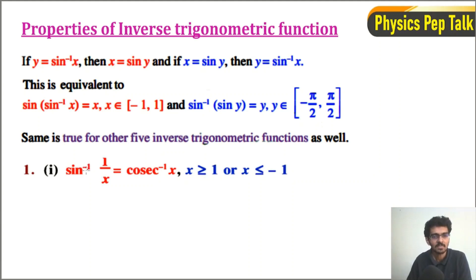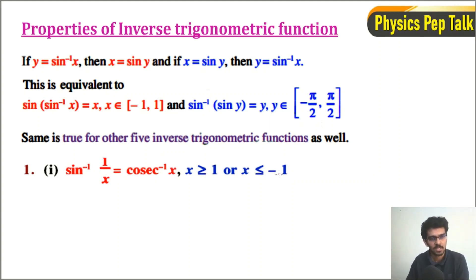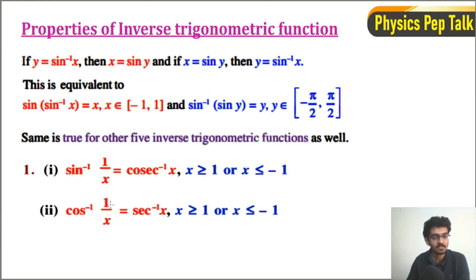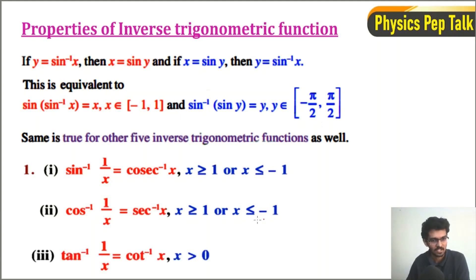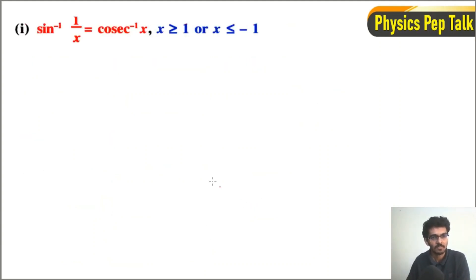Sin inverse of 1 divided by x is equal to cosec inverse of x, for x greater than or equal to 1 or x less than or equal to minus 1. The second one is cos inverse of 1 divided by x is equal to sec inverse of x. The third one is tan inverse of 1 divided by x is equal to cot inverse of x, for x greater than 0.